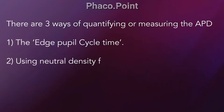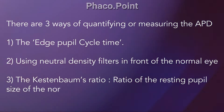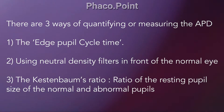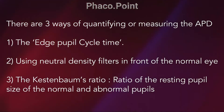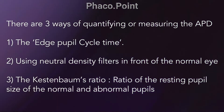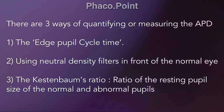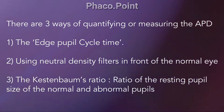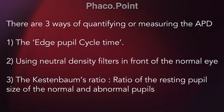There are three ways of quantifying or measuring the afferent pupillary defect: the edge pupil cycle time, neutral density filters placed in front of the normal eye until reflexes become equal, and the Kastenbaum ratio, which is the ratio of the resting pupil size of the normal and abnormal pupils.